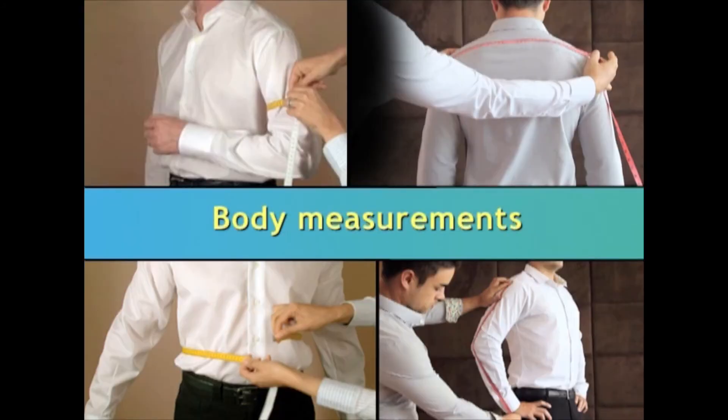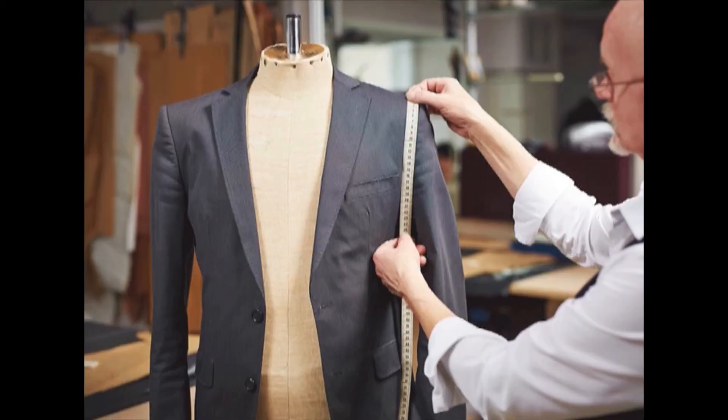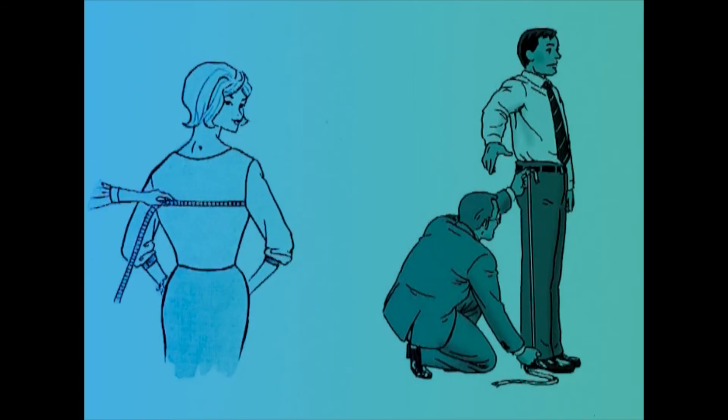Let us see the importance of body measurements in pattern making. Measurements play a major role in the development of a basic pattern set. Garment construction is only based on measurements, so it is very important for a dressmaker to know how to take body measurements. There are two types of measurements: horizontal and vertical.